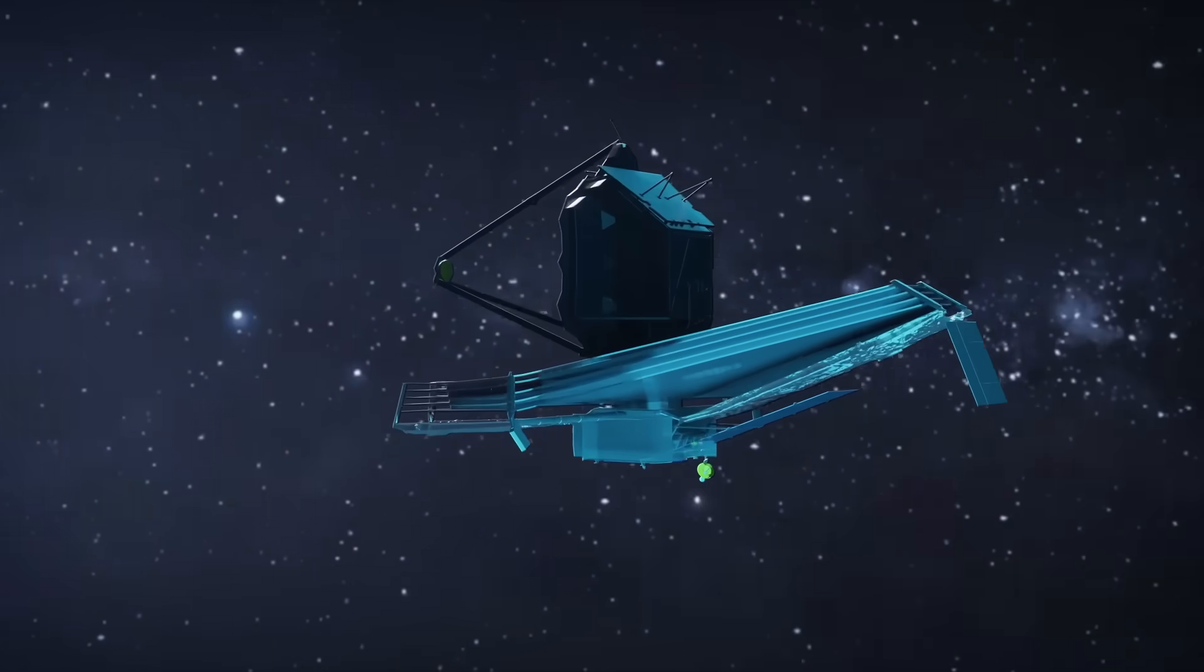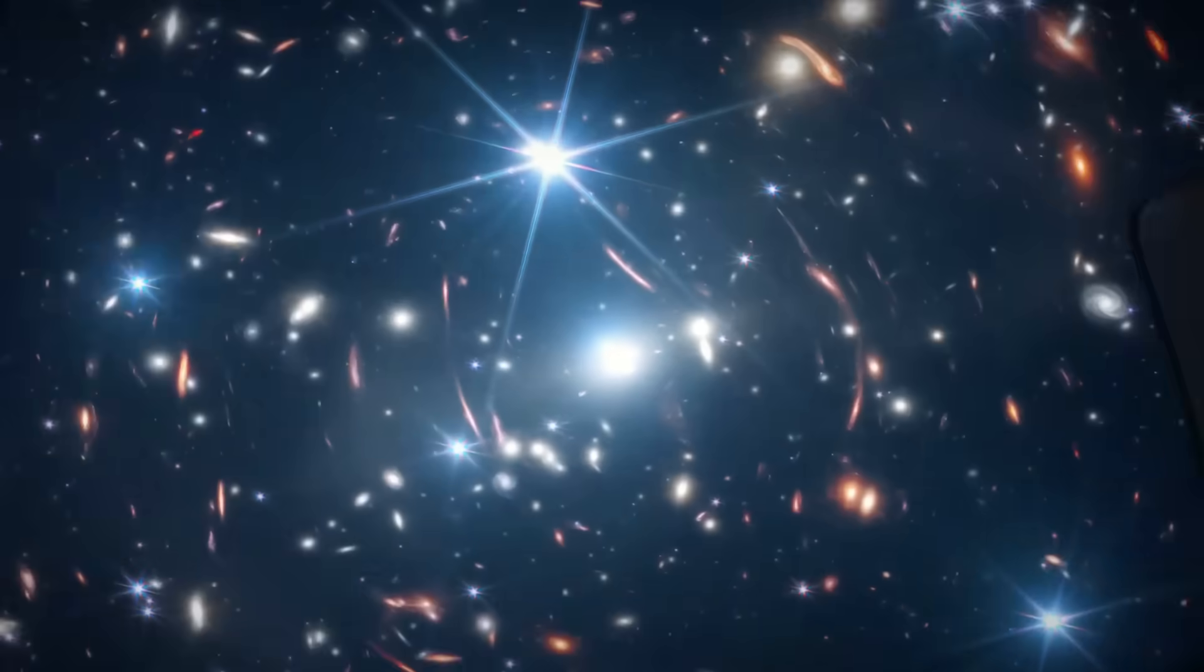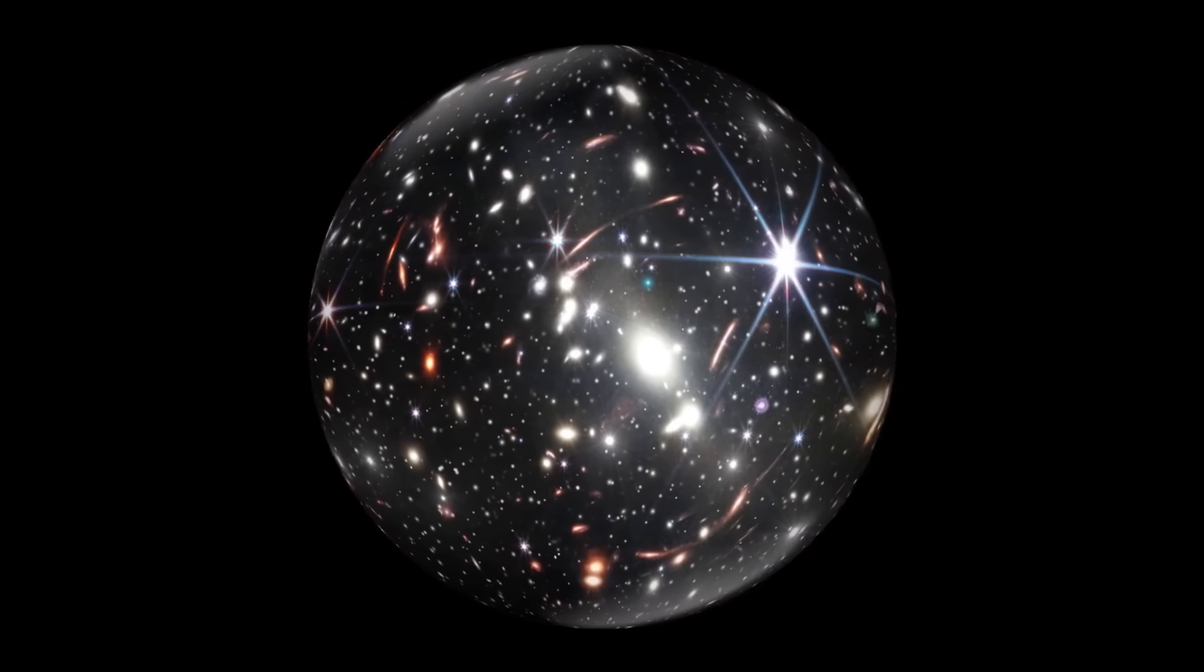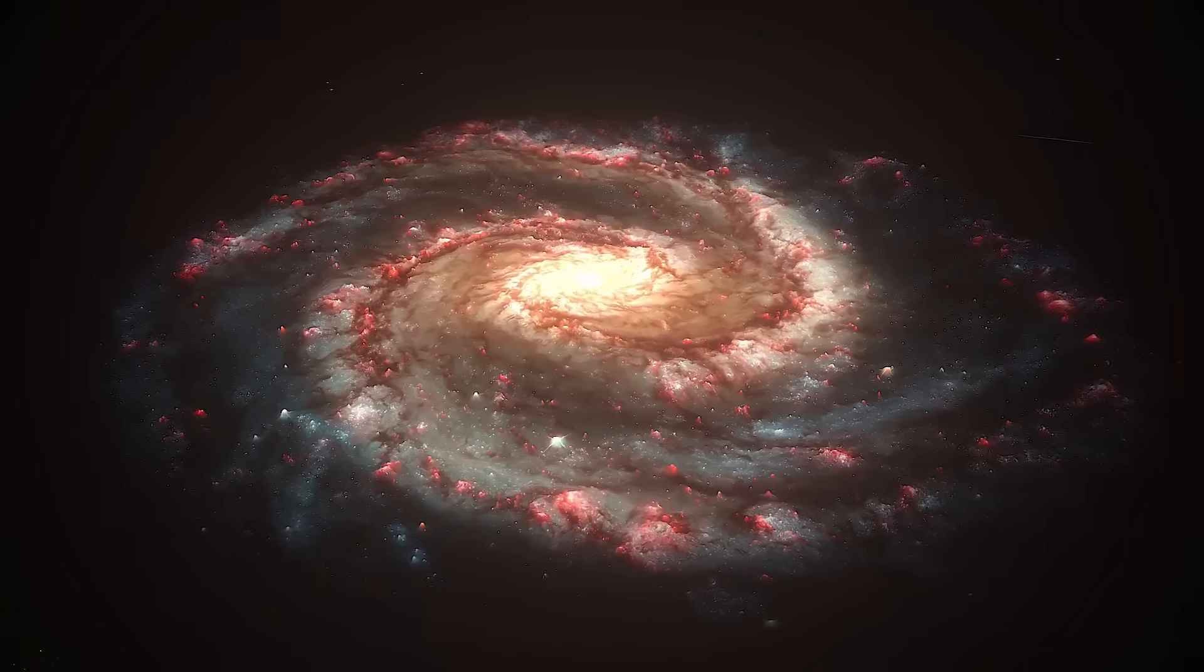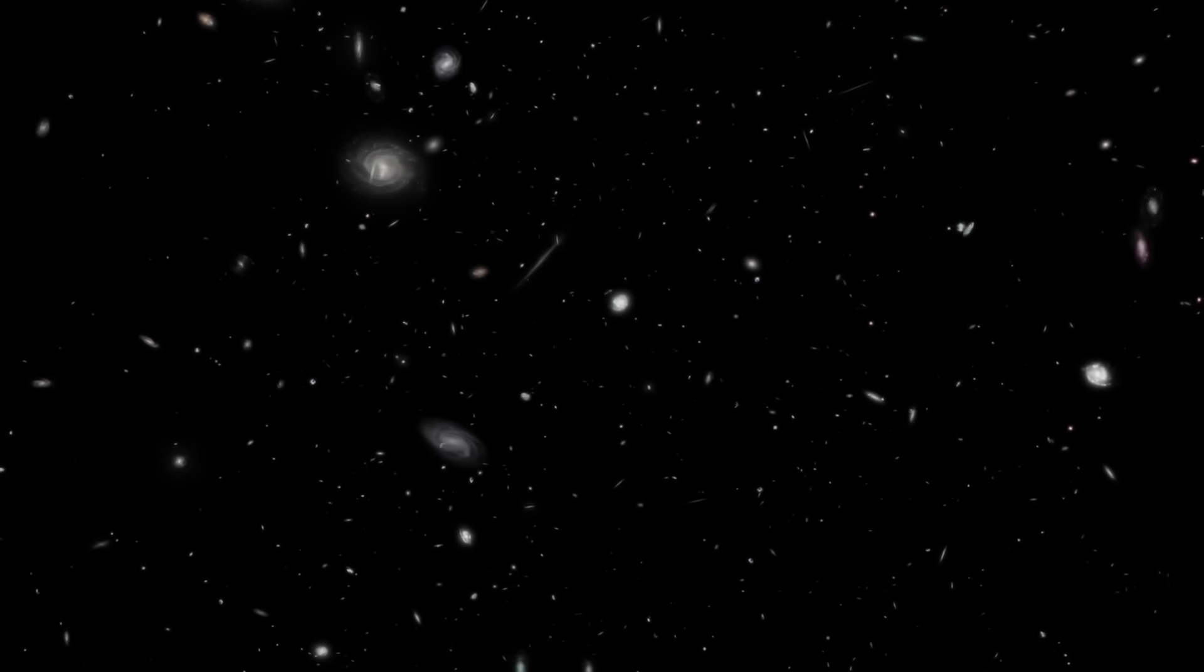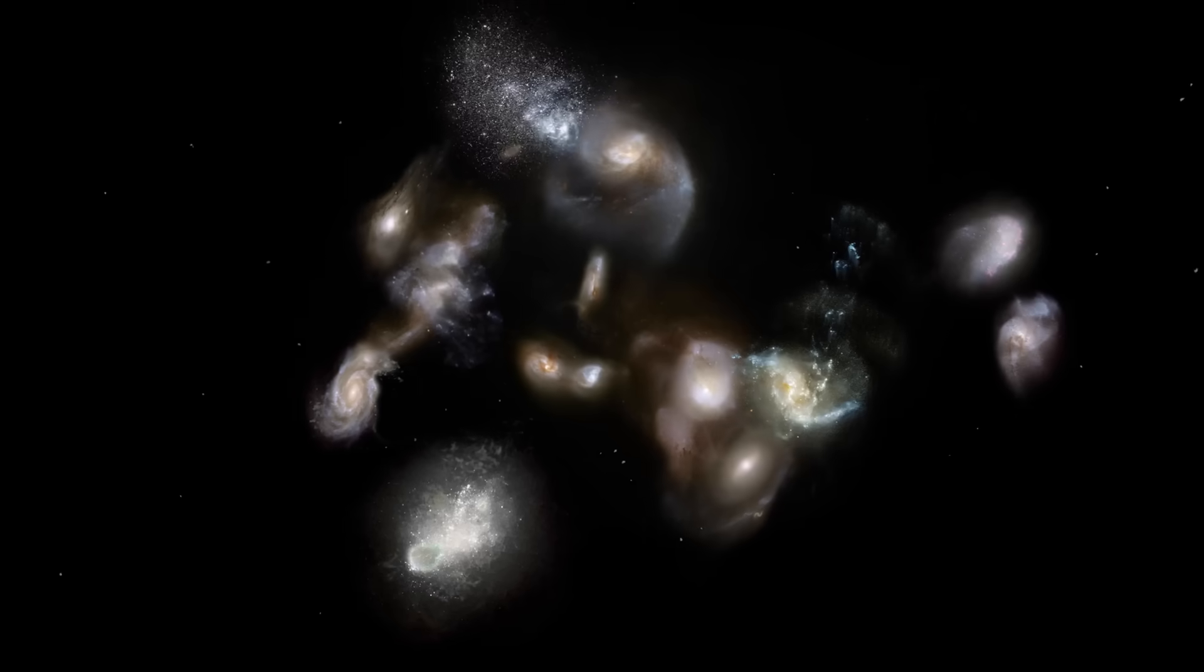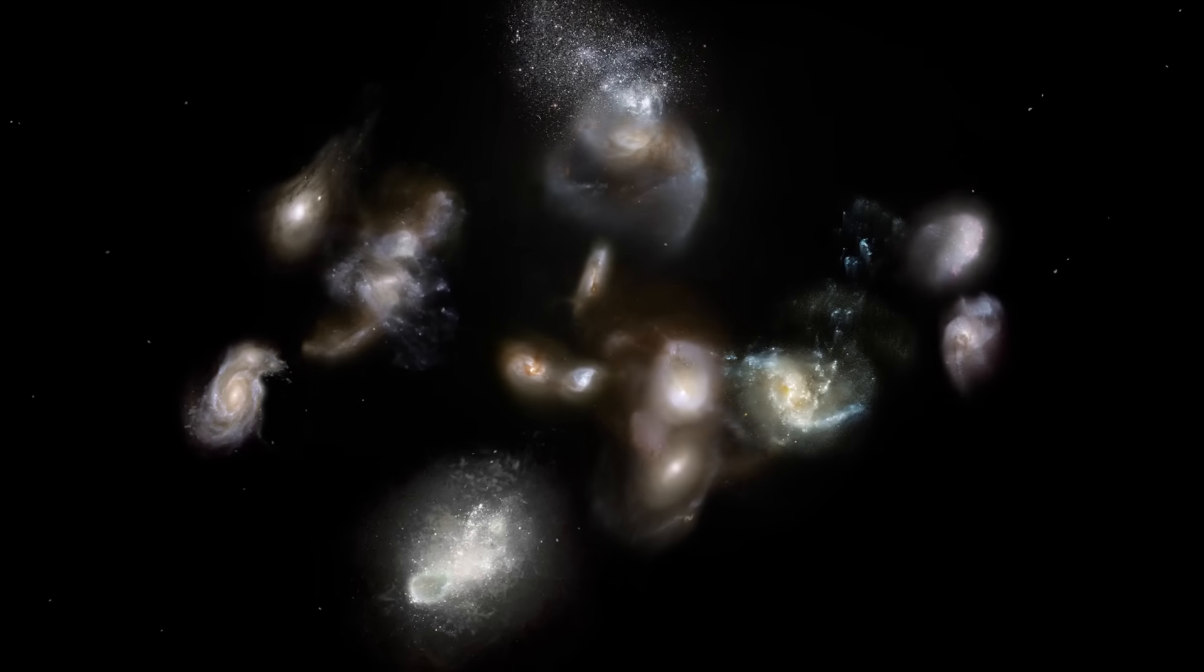Since its launch, the James Webb Space Telescope has made some fascinating discoveries about the early universe. One of the most intriguing findings comes from its observations of mature, primordial galaxies. These galaxies appear far too massive, too evolved and too structurally mature for the time periods in which they existed. Their presence challenges our very understanding of how the universe evolved.